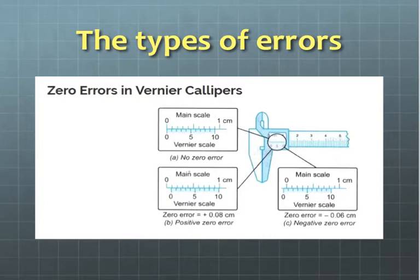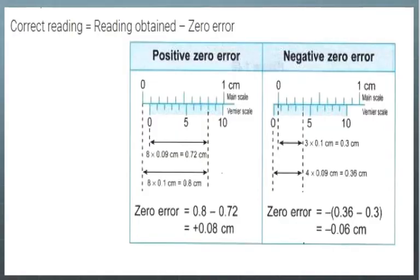The formula of positive zero error is true reading equal to observed reading minus zero error. The formula of negative zero error is true reading equal to observed reading minus negative zero error.